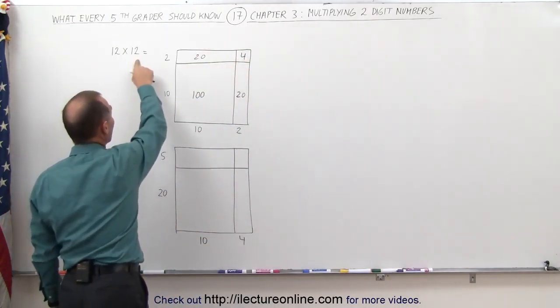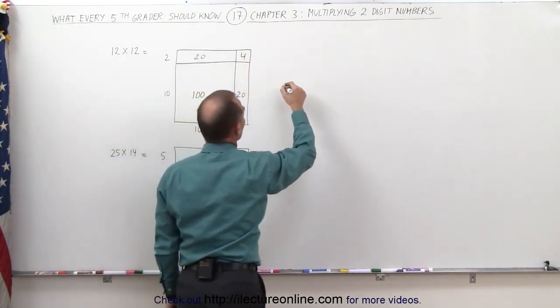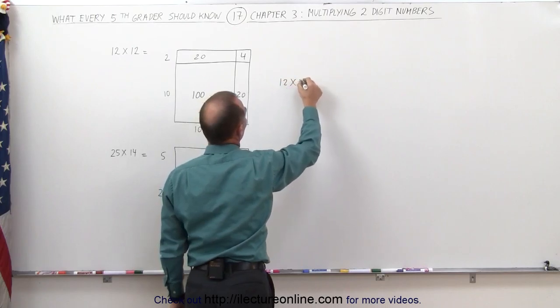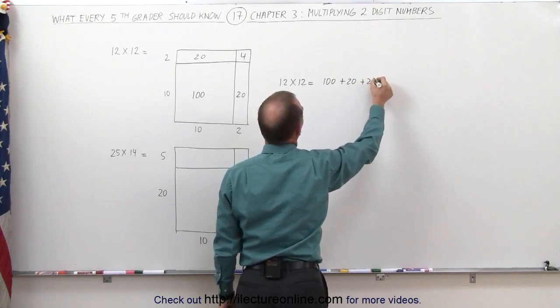Therefore, 12 times 12 is the same as adding 100, plus 20, plus 20, plus 4. So we can say that 12 times 12 is equal to 100, plus 20, plus 20, plus 4.